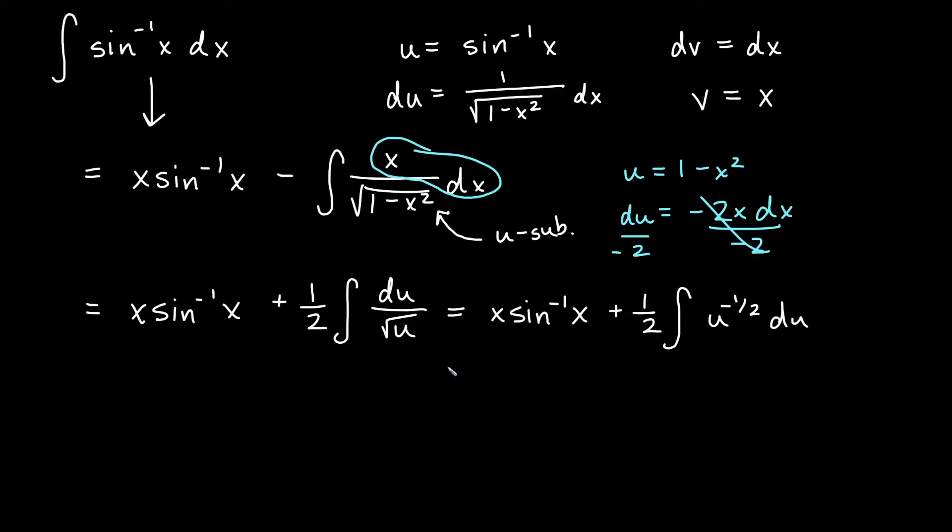So we can simply integrate using power rule. So we'll say x inverse sine of x plus one half. Now, I add one here. So that'll be u to the one half. And I divide by the new power. So dividing by a half is like multiplying by two. So that's what we'll have there.